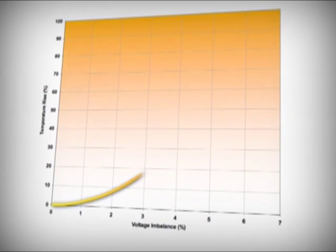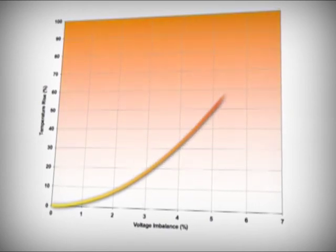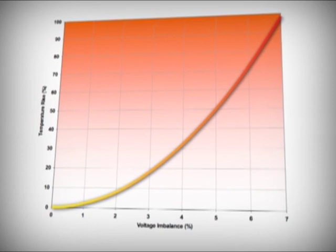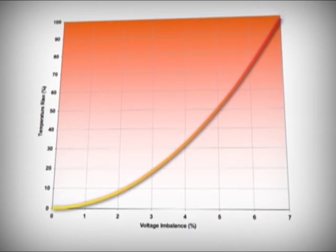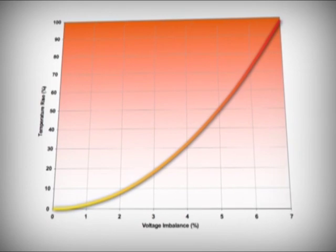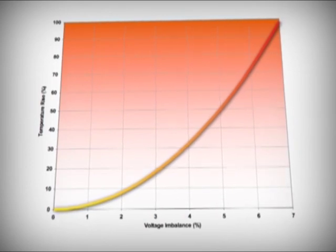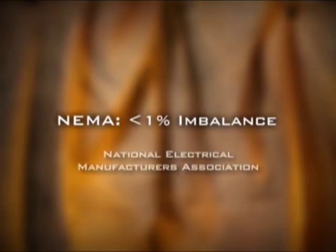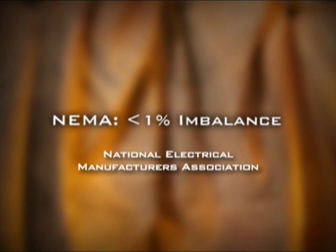Even a slight voltage imbalance causes a significant temperature increase in the windings. As the imbalance grows worse, the temperature skyrockets. And that's bad news for compressors, because operating a motor at 10 degrees centigrade over the rated temperature cuts its life in half. Phase balance is so important that the National Electrical Manufacturers Association recommends no more than a one percent imbalance for motors operating at full load.